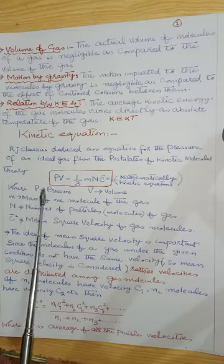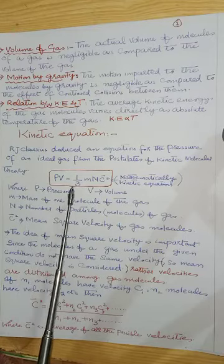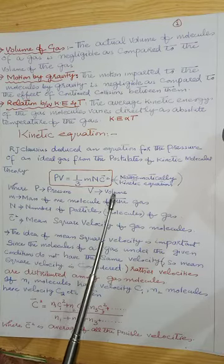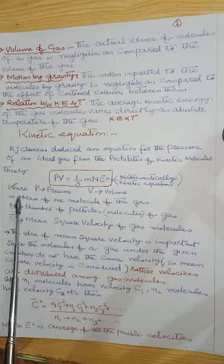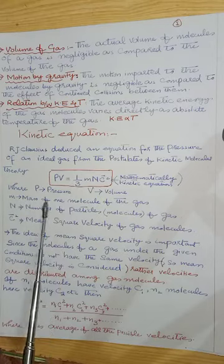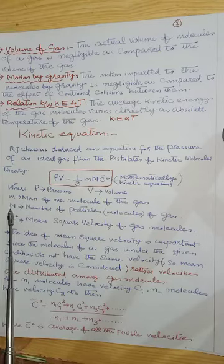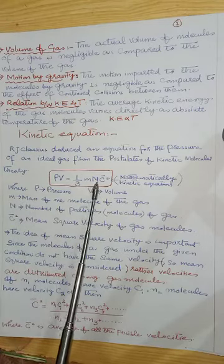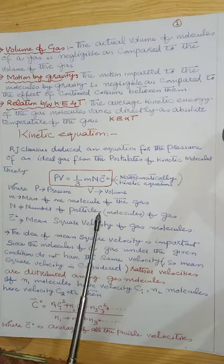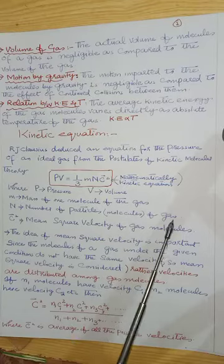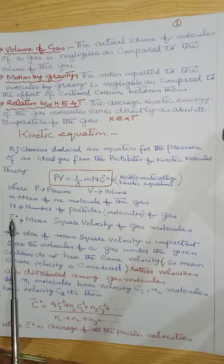In this equation, P is pressure, V is volume, m is the mass of one molecule of the gas, n is the number of particles or molecules of gas.